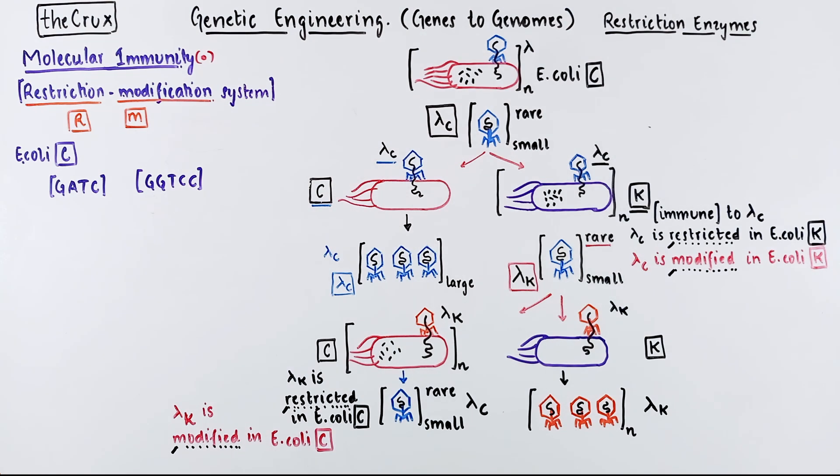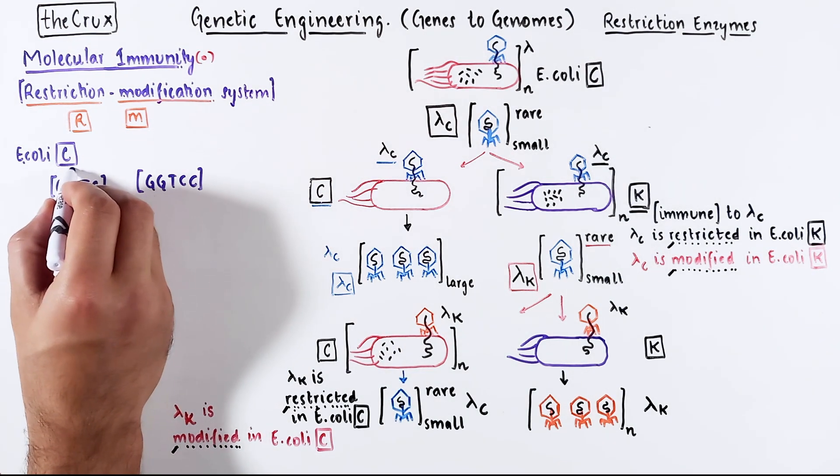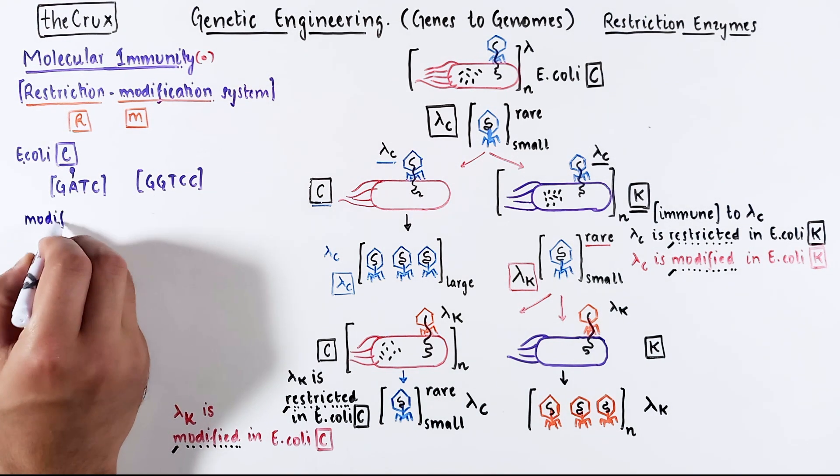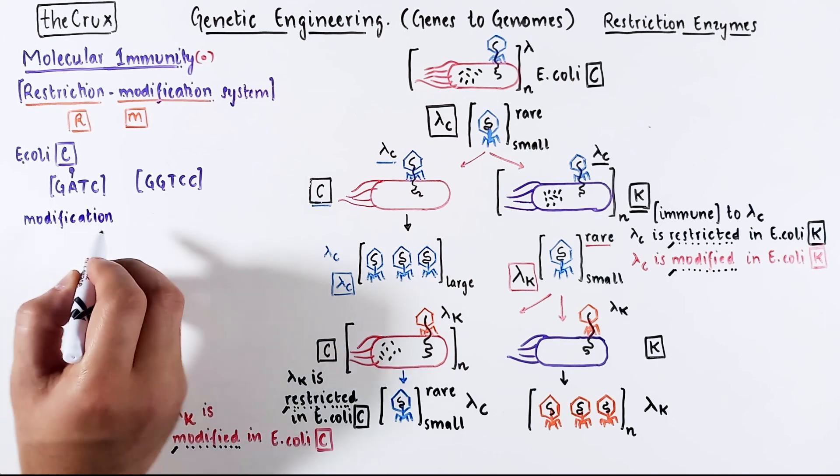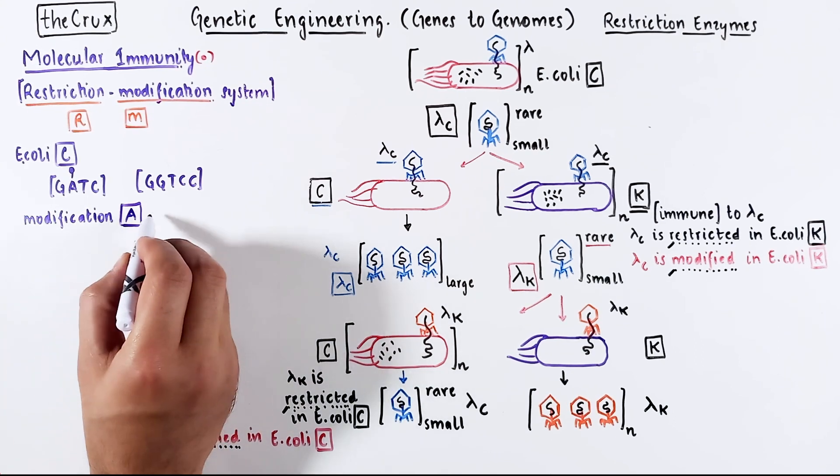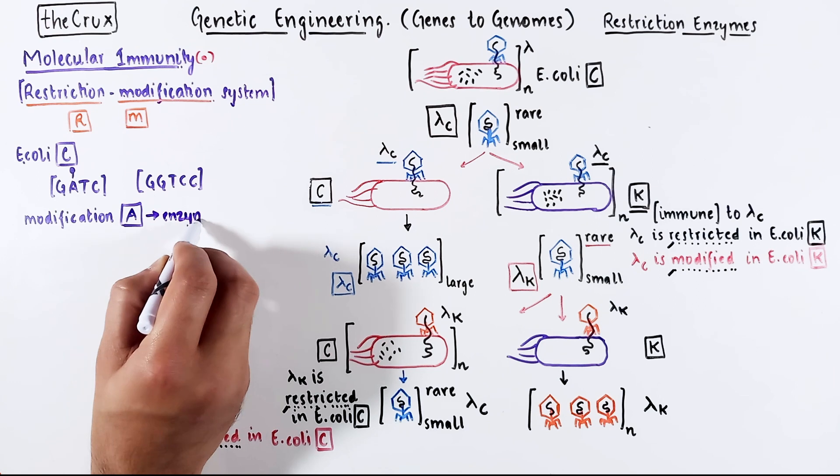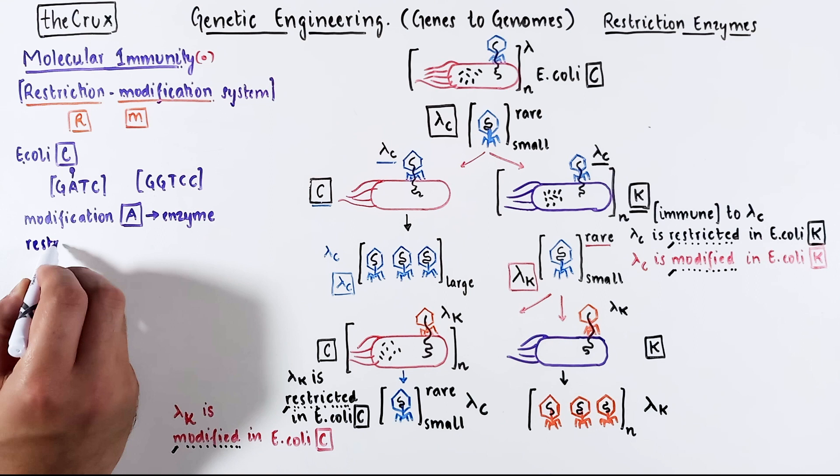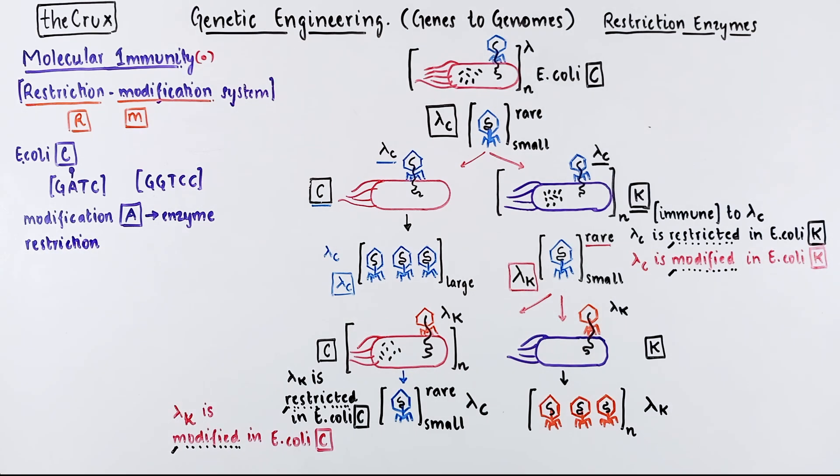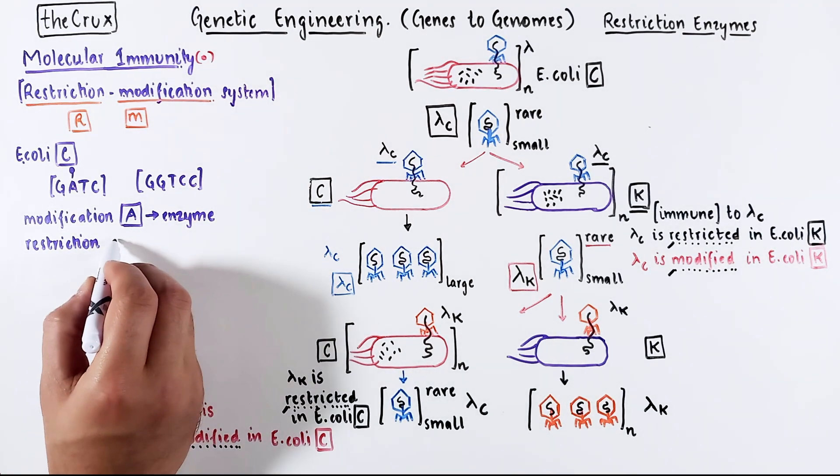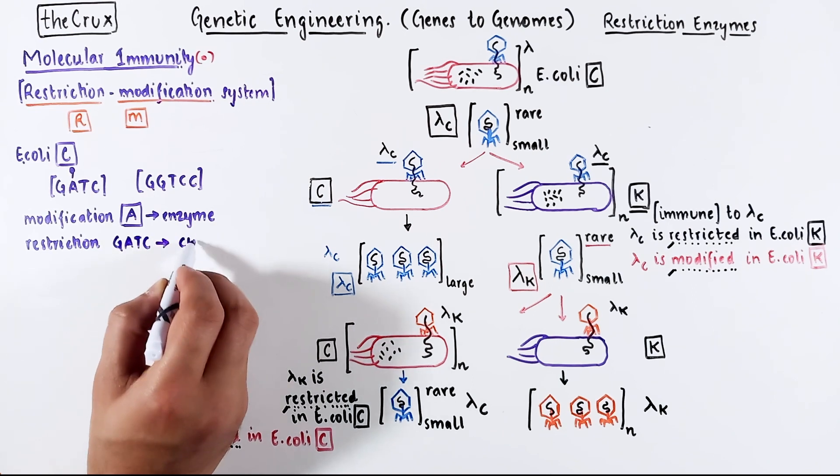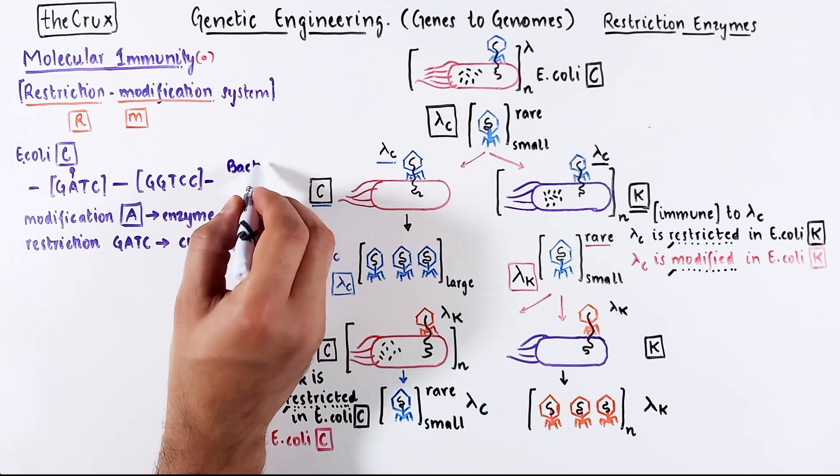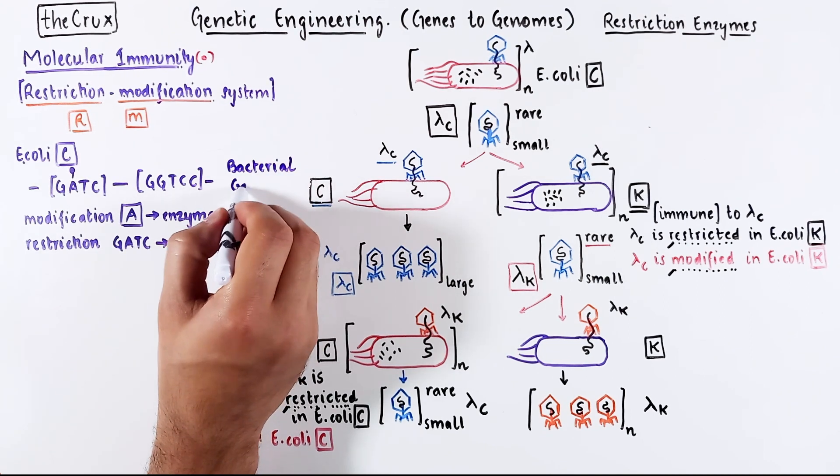Also assume that E. coli C carries a modification on A wherever GATC appears. So all the adenines are modified only when the A is in the GATC. And there is an enzyme that does this specific modification at GATC by specifically recognizing GATC. Similarly, there is a restriction enzyme that finds GATC, importantly the non-modified GATC, and cuts it. So the genome of E. coli C has this structure with adenines modified if the A is in GATC.